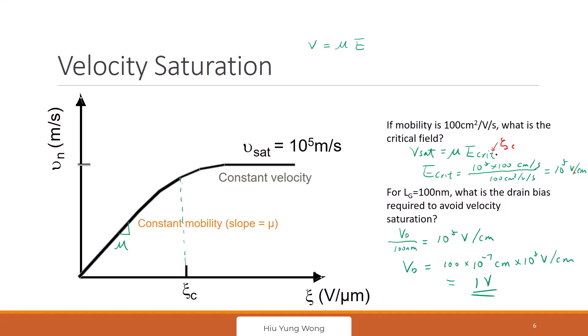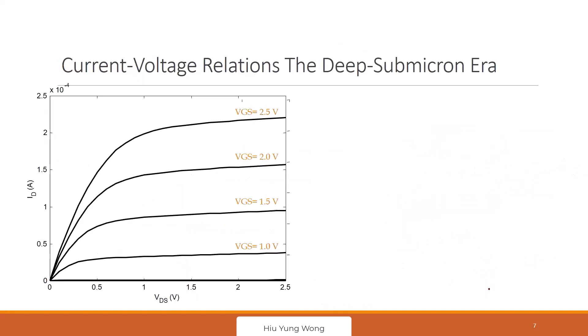So then we did some calculation. For a gate length of 100 nanometer, even with one volt of drain bias, it goes into saturation already. So this is something we have been dealing with. So then how is it going to change the relationship between the device and the ID-VD relationship?